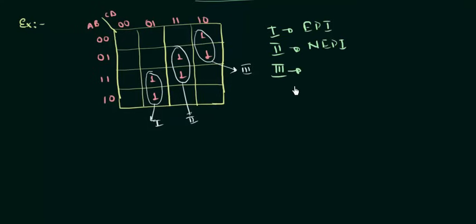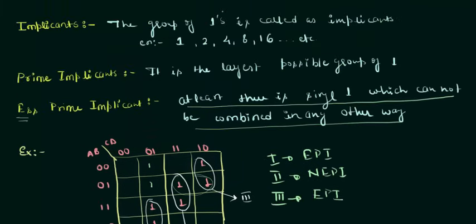Now we will see for the third group of ones. This is also a prime implicant because it is the largest possible group of ones. This one can easily be combined in another way, but this one cannot be combined in any other way, which makes it the essential prime implicant. So this is how you find out the essential prime implicant and the non-essential prime implicant. We have studied three things in this lecture: implicants, prime implicants, and essential prime implicants. In the next presentation we will see more examples of the four-variable K-map.